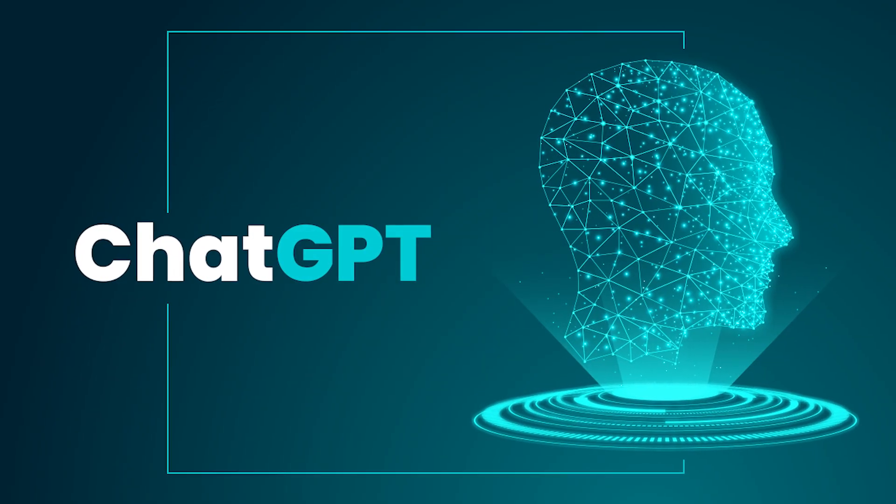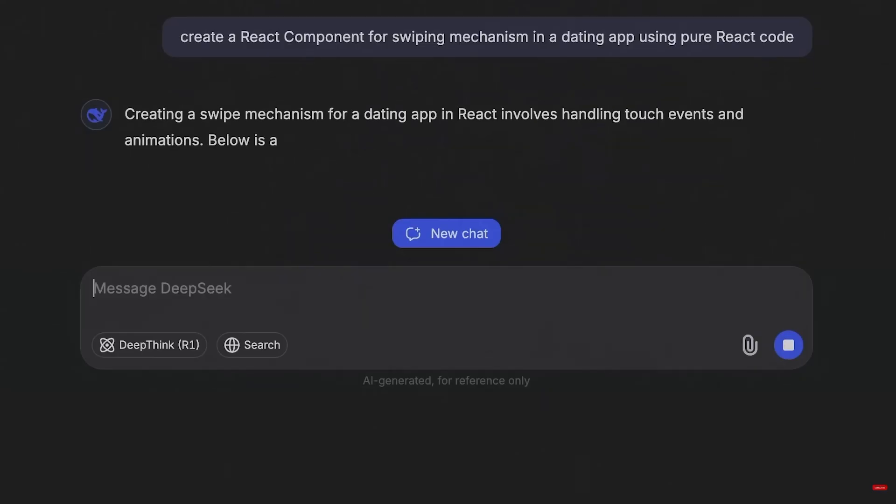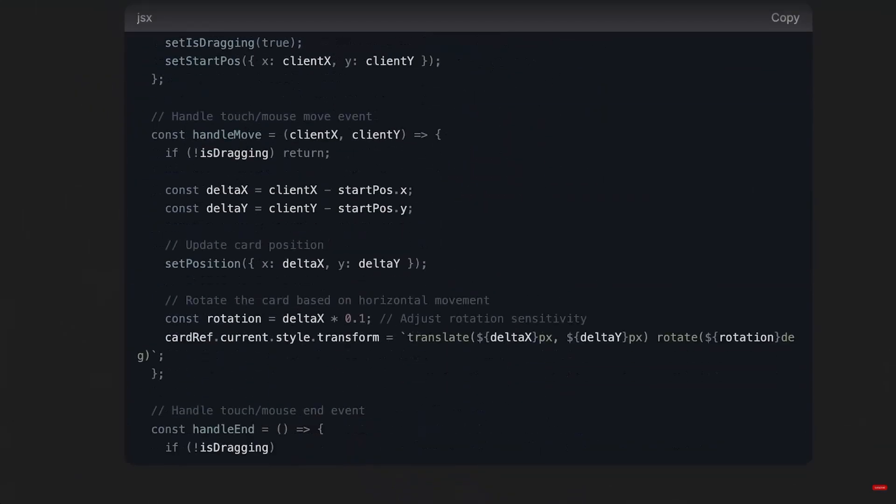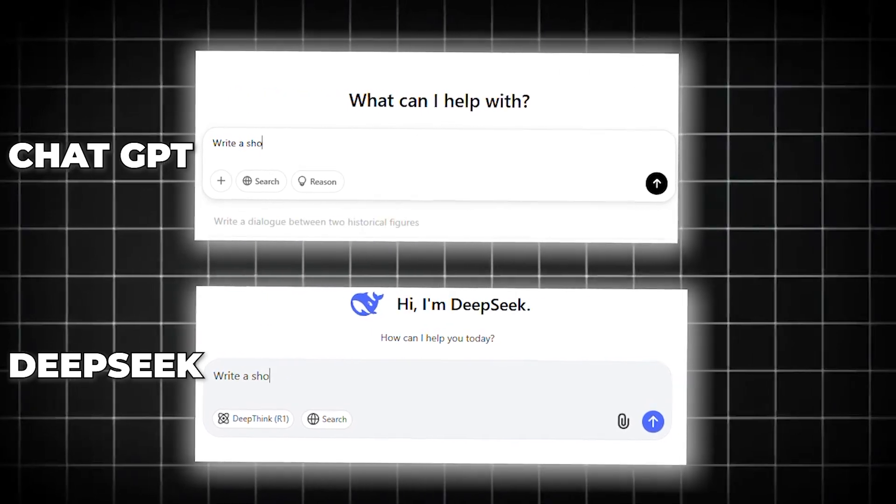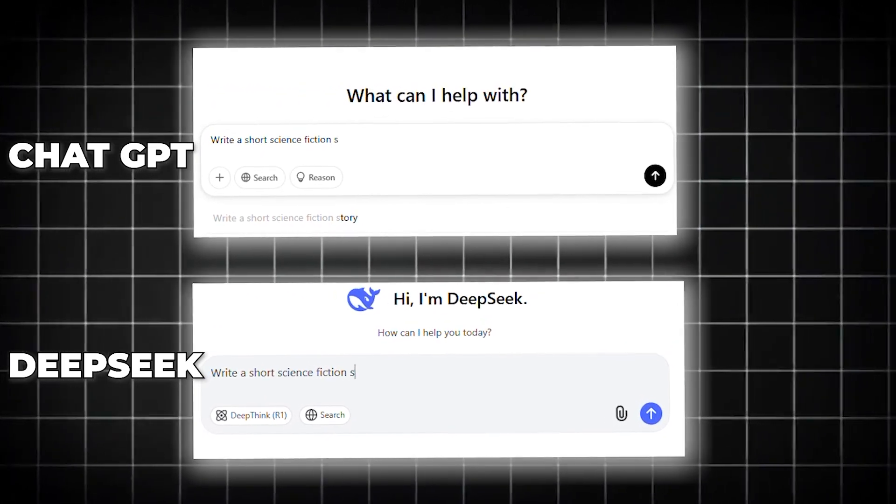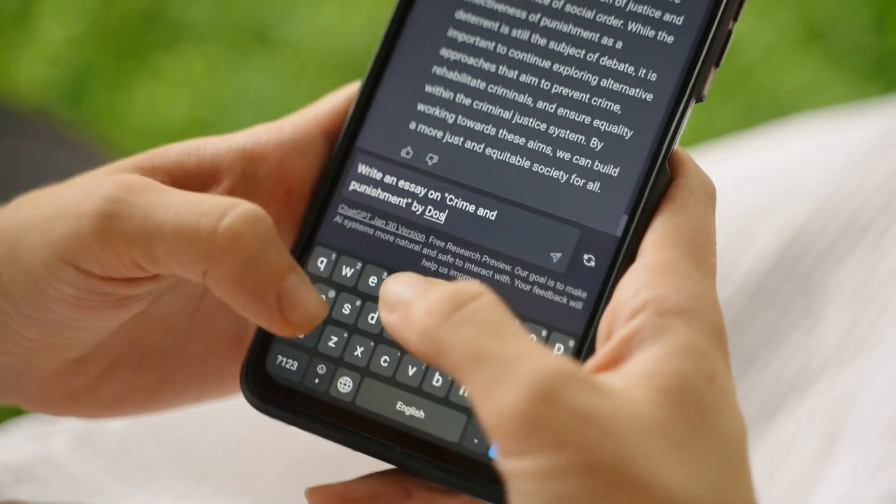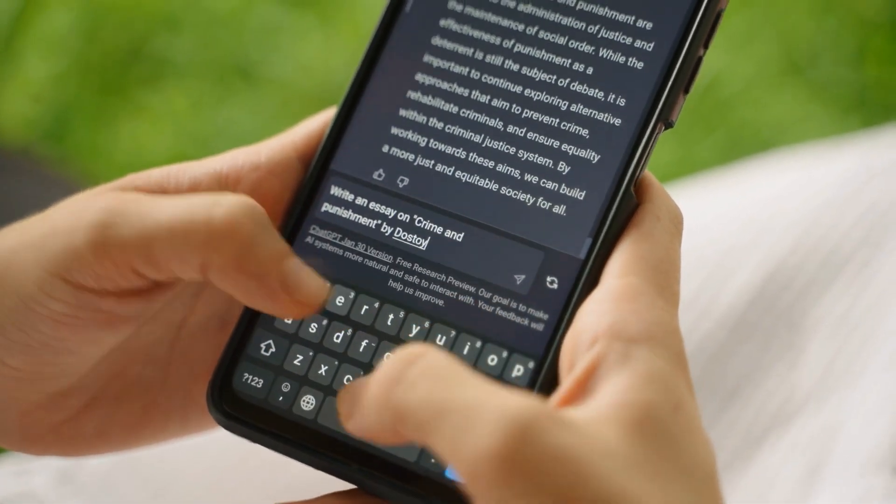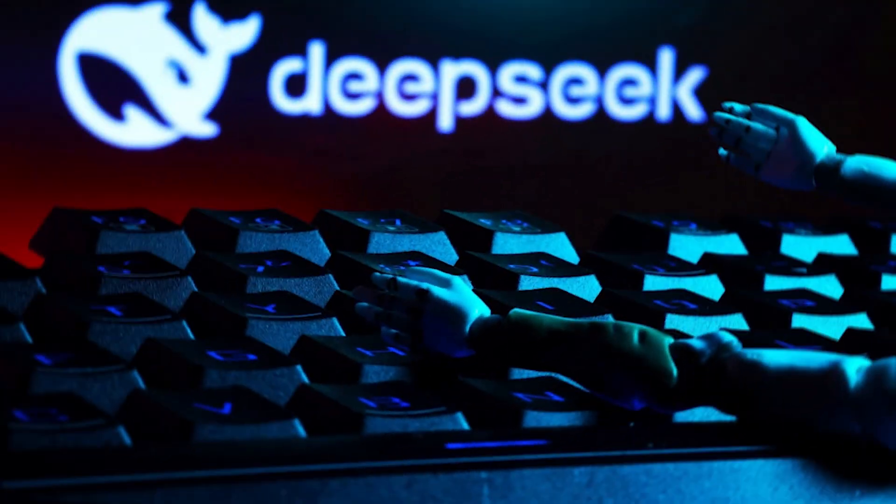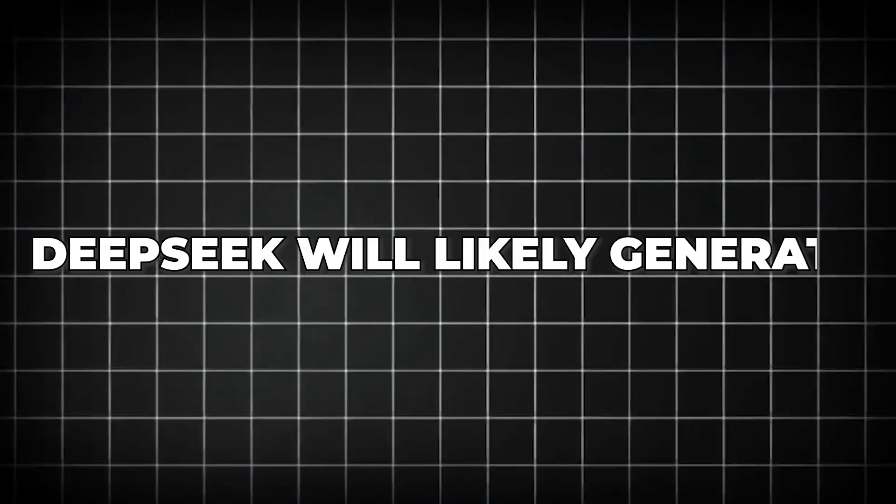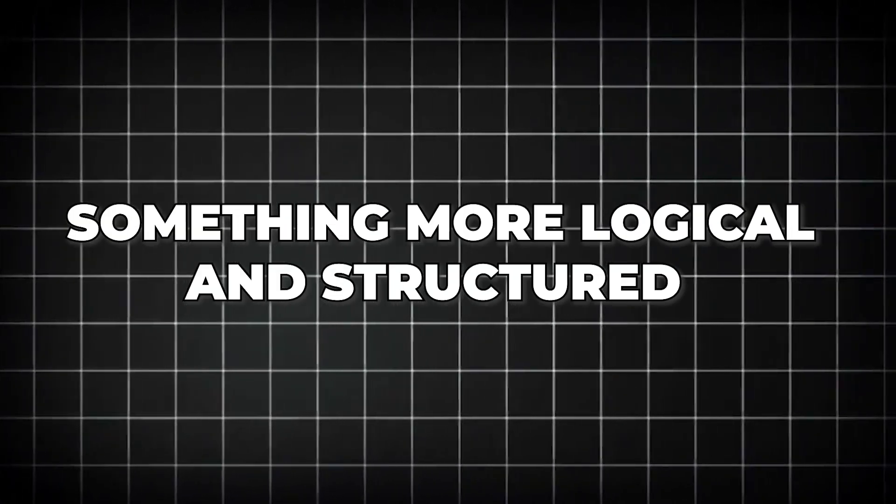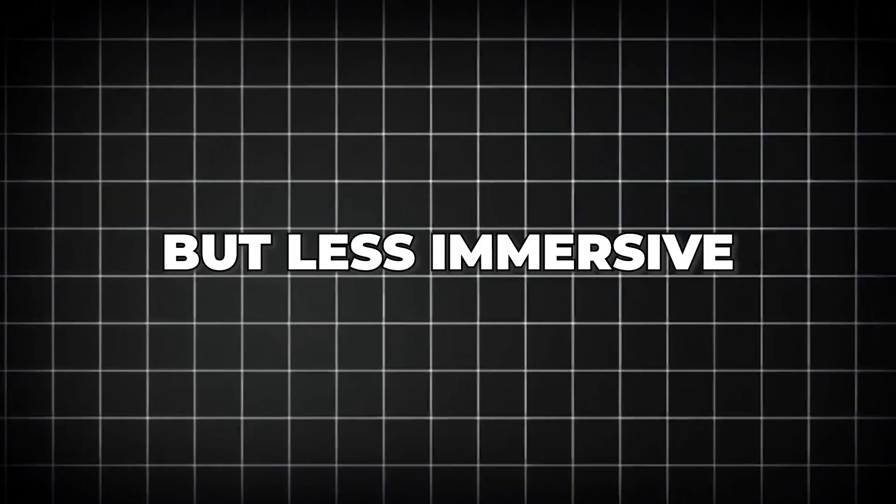Unlike ChatGPT, DeepSeek isn't great at tasks requiring imaginative, abstract thinking. For example, if you ask both AIs to write a short sci-fi story, ChatGPT will create an engaging narrative with characters and emotions. But on the contrary, DeepSeek will likely generate something more logical and structured, but less immersive.